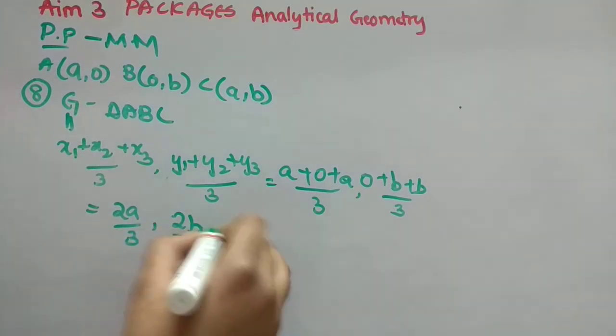Now, here A plus A is 2A divided by 3, comma. B plus B is 2B divided by 3. Options. It is option B from the matrix matching. Now, ninth one we will see. So, for the ninth one, what we have to find? We have to find the midpoint of AB midpoint.